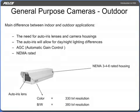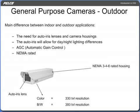The main difference between indoor and outdoor applications is the need for auto iris lenses and camera housings. The auto iris will allow for day-night lighting differences. The setup procedure for outdoor cameras includes the use of AGC as well as back focusing of the camera and lens combination.